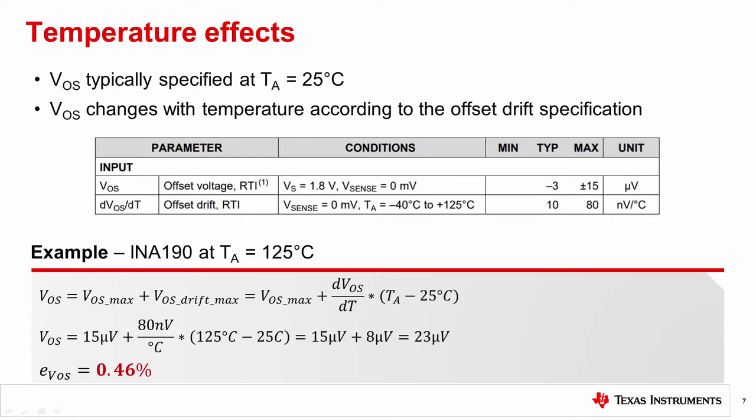Finally, let's consider the effects that temperature has on input offset voltage and offset error. In most amplifier data sheets, VOS is specified at room temperature, or 25 degrees C. If we want to analyze VOS over temperature, we must consider VOS drift as well. Drift is shown in the electrical characteristics table as dVOS over dt, or a change in VOS proportional to a change in temperature.